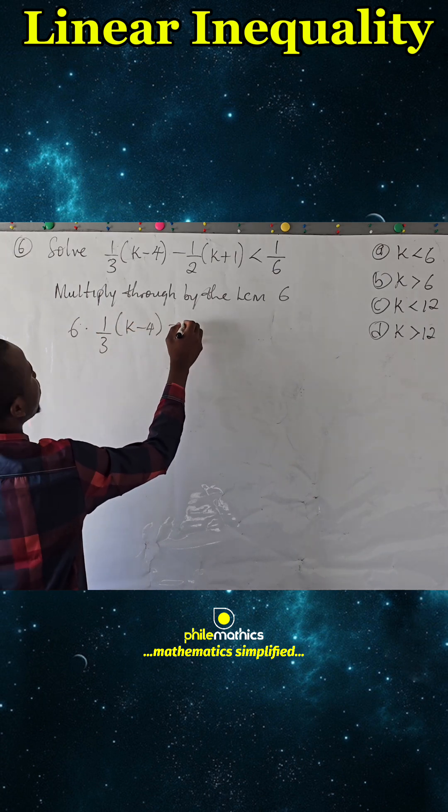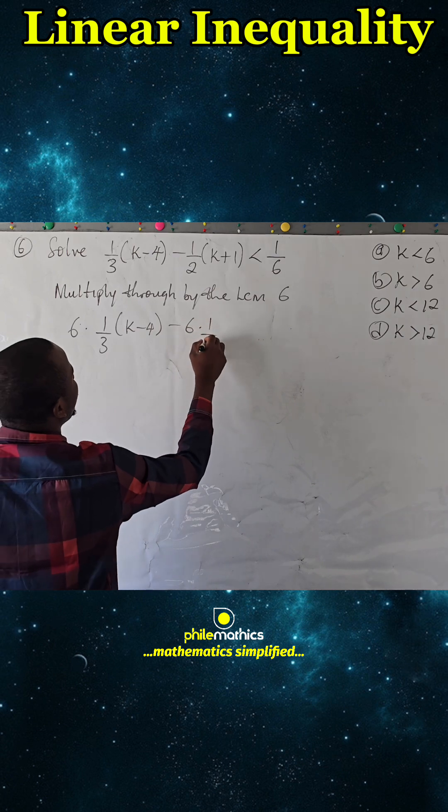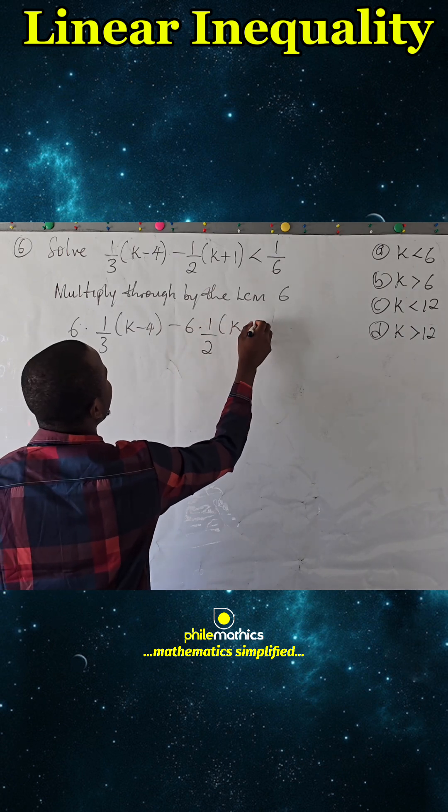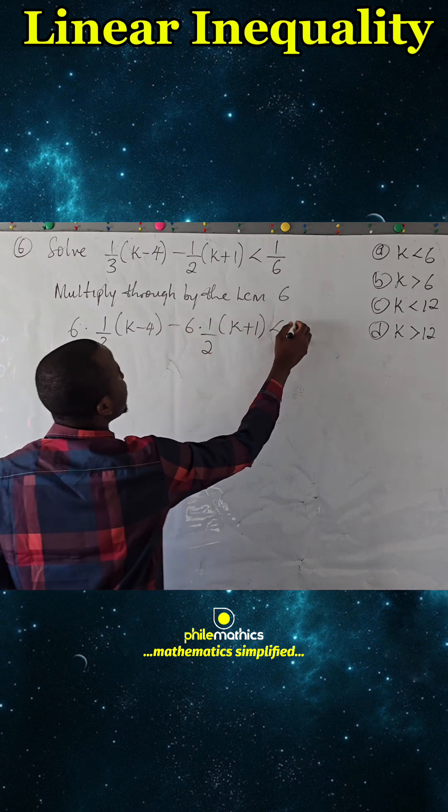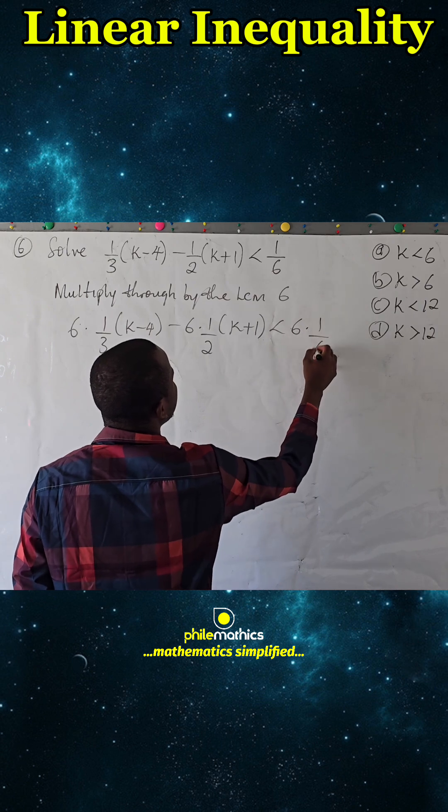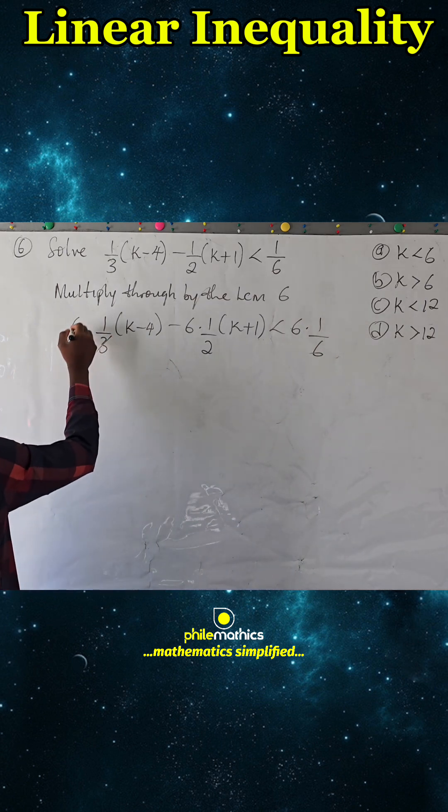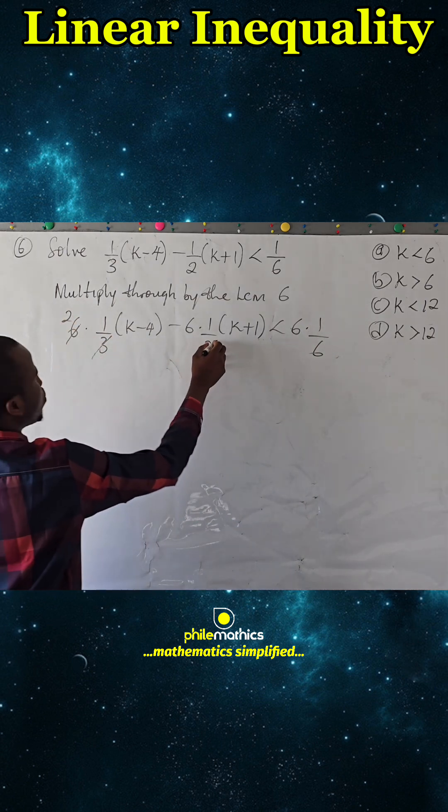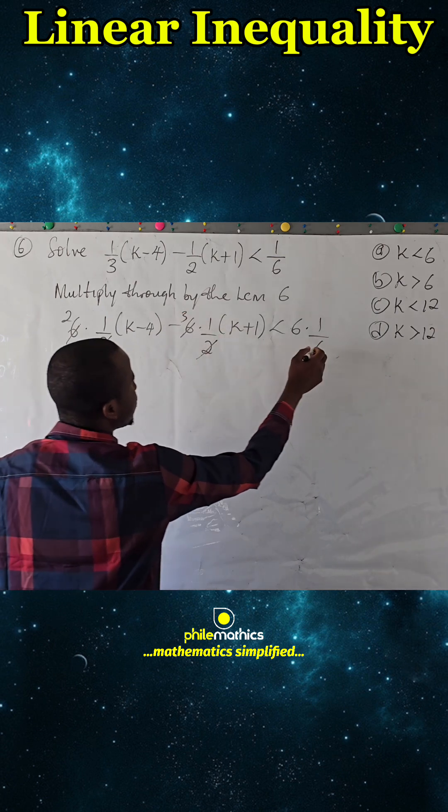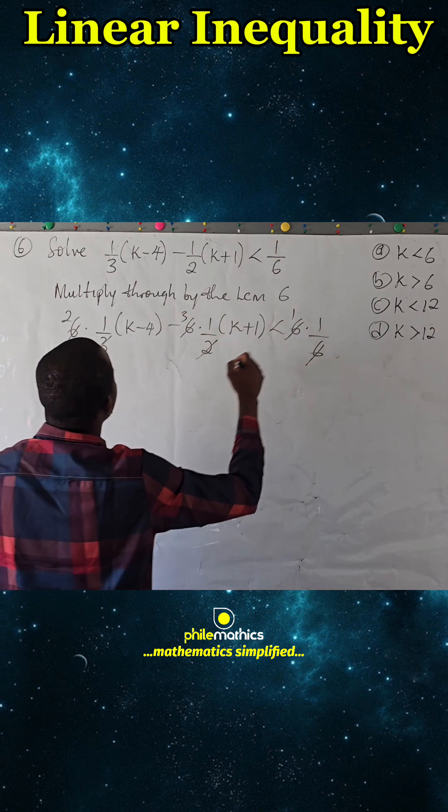Three can go into six two times, two can go into six three times, six can go into six once. So now we have 2(k-4) - 3(k+1) < 1.